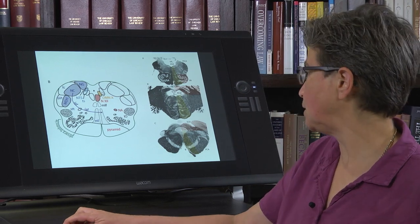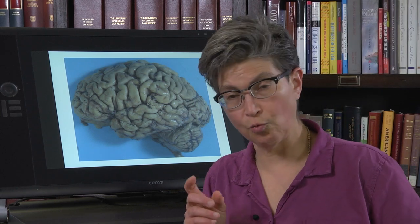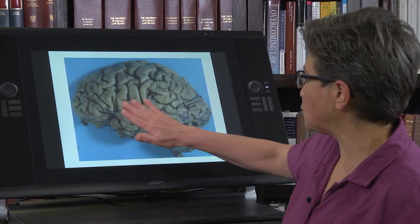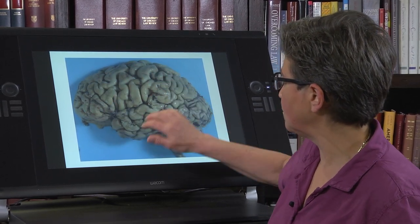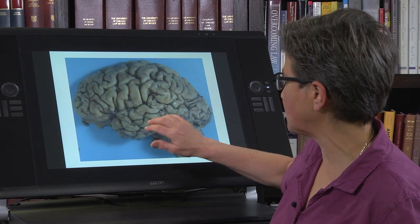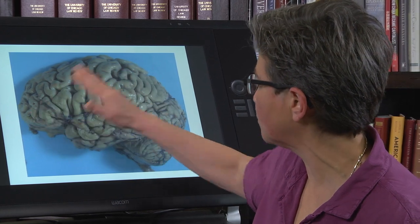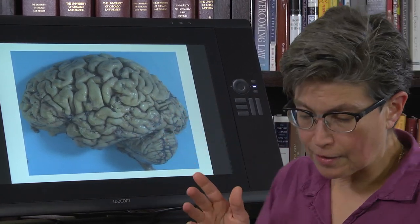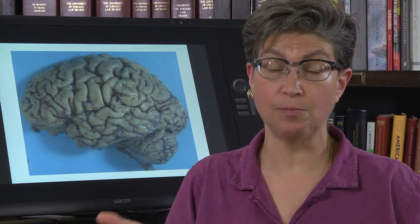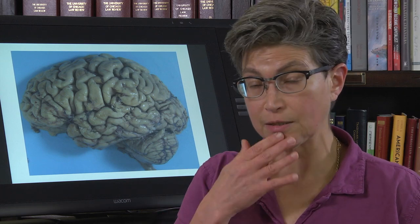Now we can go to the anterior circulation. The effect of a stroke depends on where it is. The middle cerebral artery is going to supply blood to most of the convexity — not going back into the occipital lobe. A middle cerebral artery stroke is the most common type of stroke.